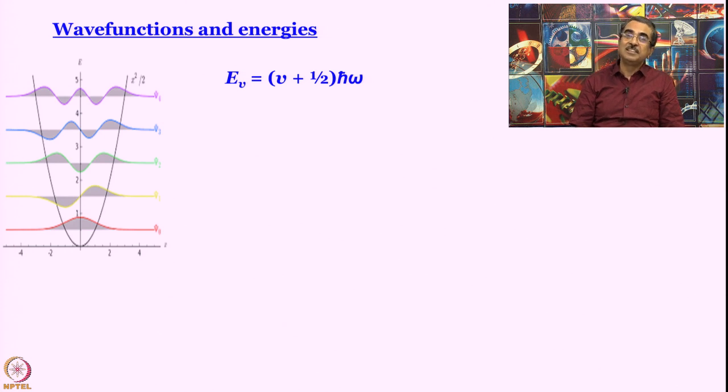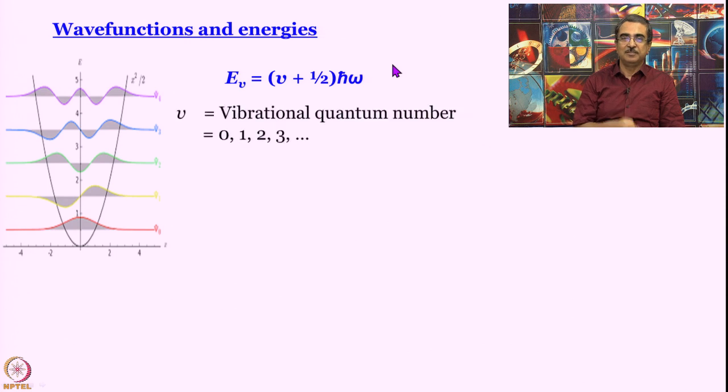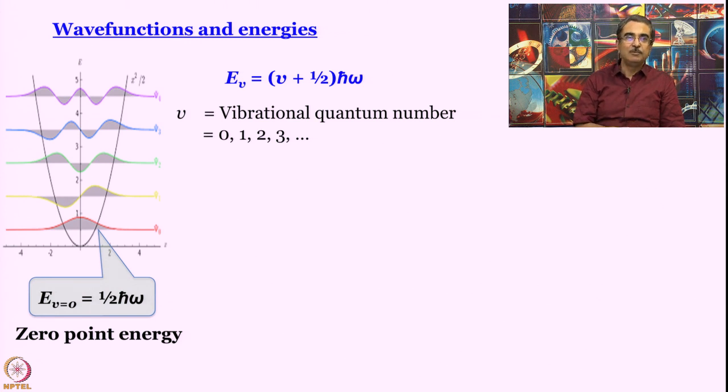Now, we have an interesting situation. If you put v equal to 0, what is E_v going to be? It will not be 0, it is going to be half h-bar omega. So this energy is called zero point energy. What it essentially says is, if it was a classical simple harmonic oscillator, it could have gone down here to the bottom of the well and it could have had no energy at all, which means it would not vibrate. However, for a quantum harmonic oscillator, it is not possible to have 0 energy.